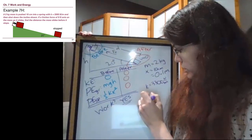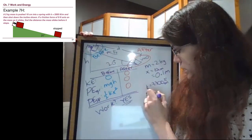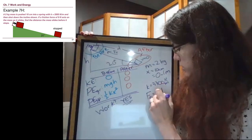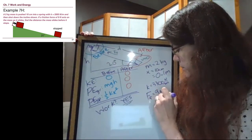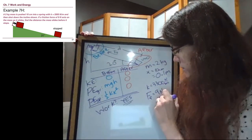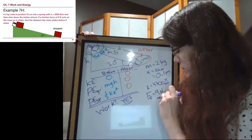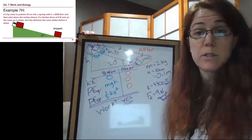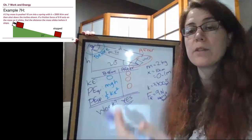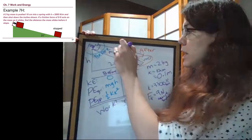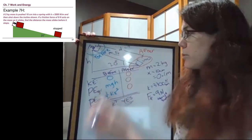If a friction force of 9 newtons against the motion acts on the mass as it slides, we're trying to find the distance the mass slides before it stops. This distance is our unknown.